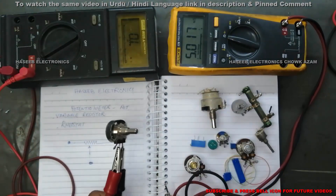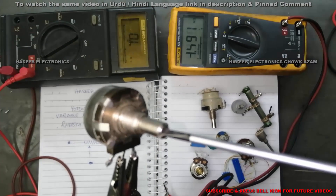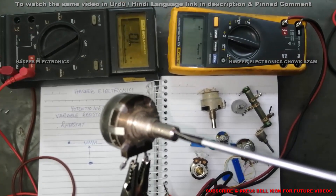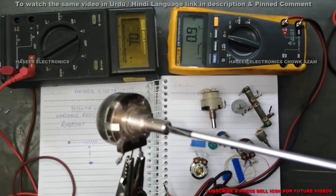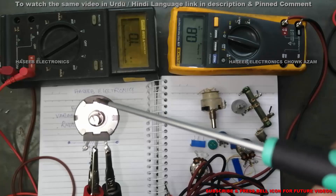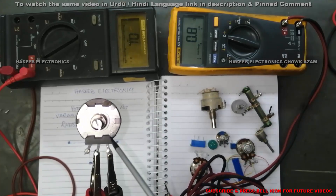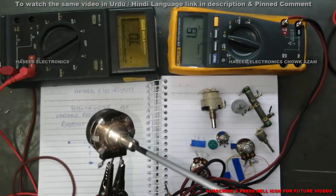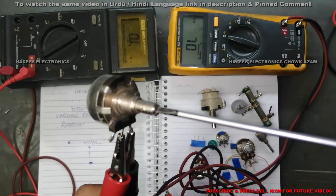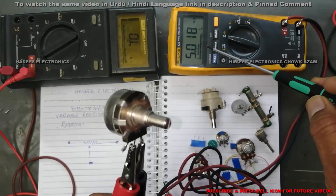We can see here it reads zero ohms. If I move this trimmer pot the resistance is increasing or decreasing. At minimum it is zero ohms, because the wiper is moved to the right end. If I rotate it fully we can see this multimeter reads five kilo ohms.